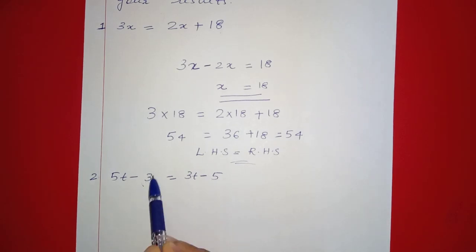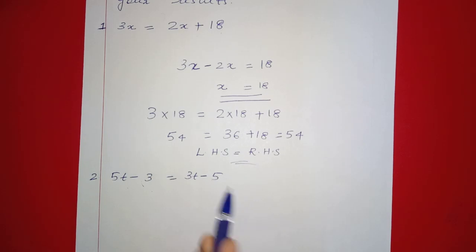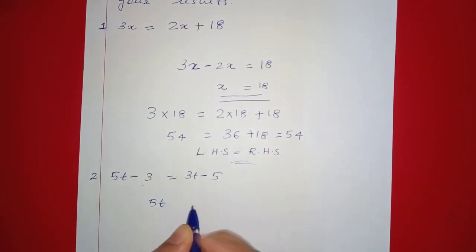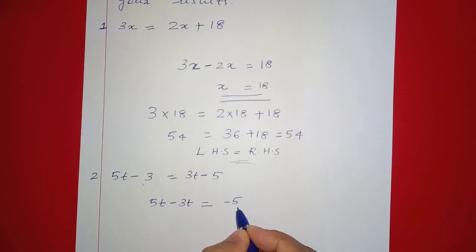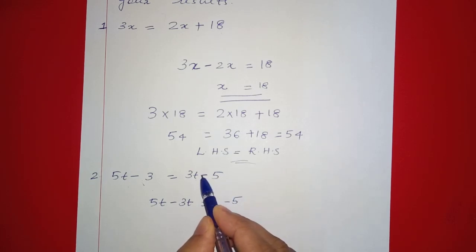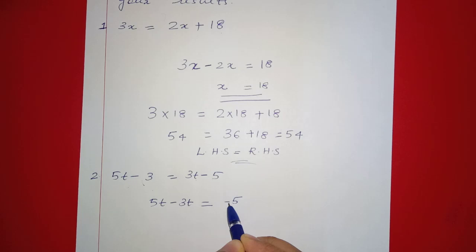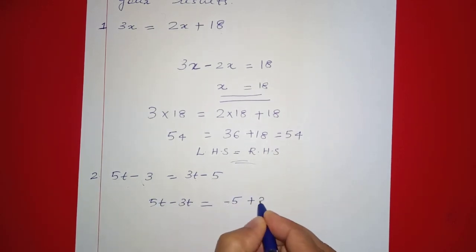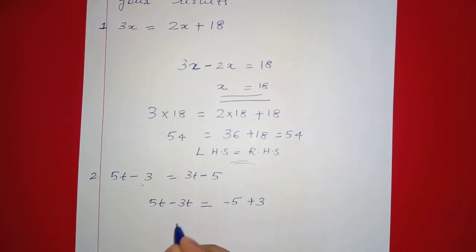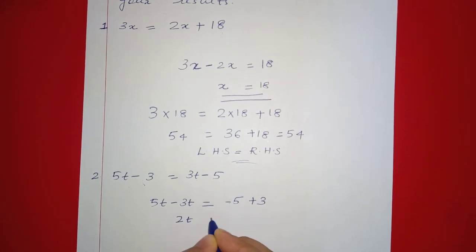We need to collect t terms on one side. Now 5t — we find the answer. Moving terms: 5t minus 3t gives us 2t on the left, and the constant terms give us minus 5 plus 3, so t is equal to minus 1.